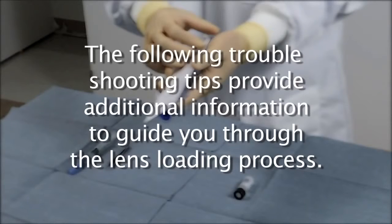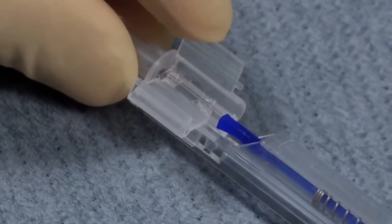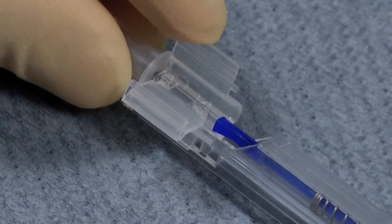The following troubleshooting tips provide additional information to guide you through the lens loading process. When closing the cartridge wings, note that if the cartridge is closed too far, the leading haptic may be pushed into the tunnel.